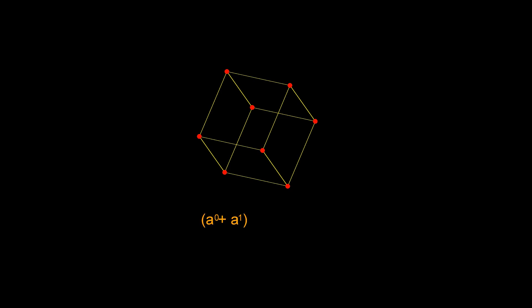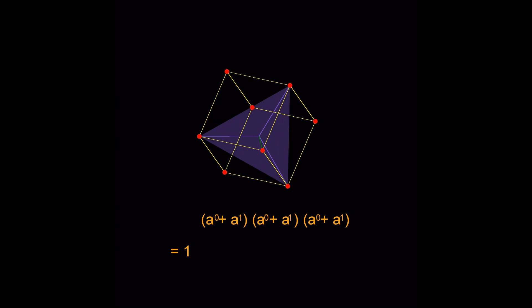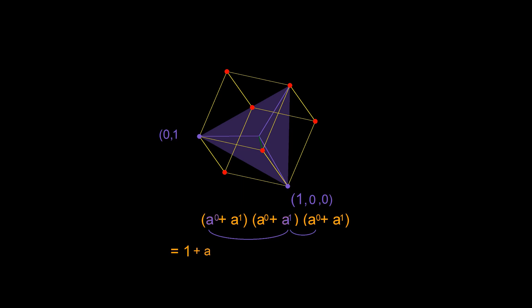For a 3d cube, we'll need three of the algebraic terms. As before, we start from 0 0 0 which corresponds to multiplying all the constant terms in the algebraic expression giving us 1. And then we move along the main body diagonal until we hit a plane a third of the way. This plane intersects three points that are basically permutations of 1 0 0. Since there are three such points, we end up with the coefficient of 3 times a.